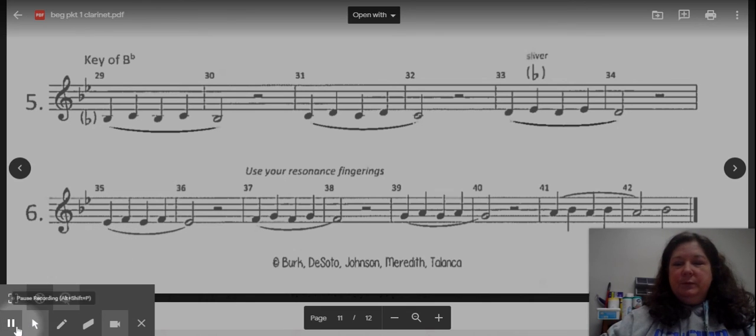And side key, E flat, thumb one, two, bottom side. Tap, two, and air. Right hand down. Rock up to A. And three, five.